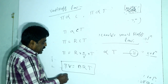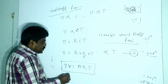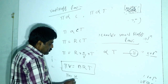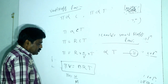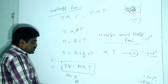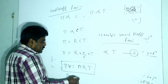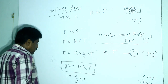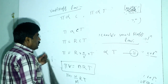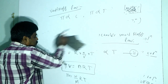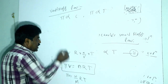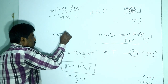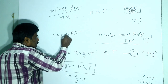The number of moles n can be written as W/M, where W is the weight of the solute and M is the molecular mass. Substituting into πV = nRT gives πV = (W/M)RT, and therefore πV = WRT/M.